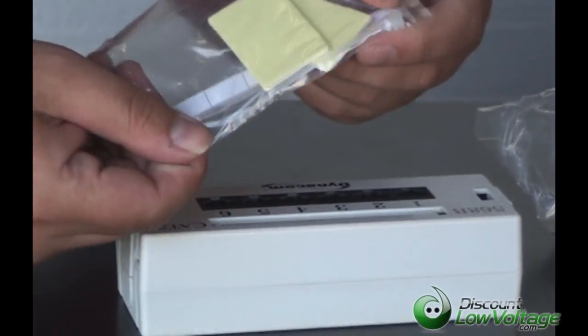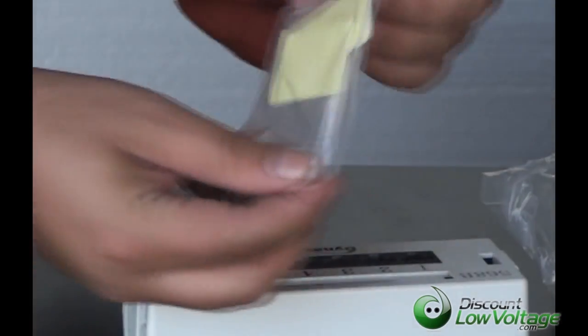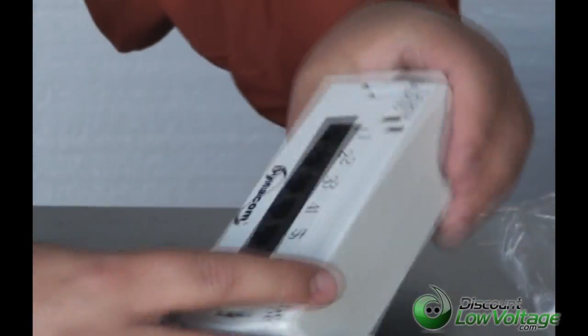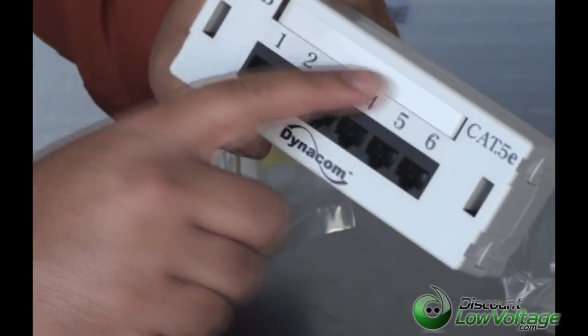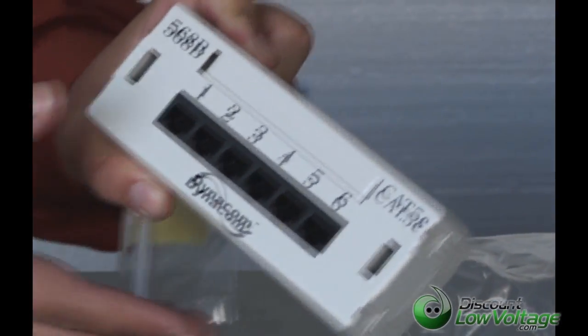It also includes a couple of small cable ties and a label strip, and that label strip's going to go right there on the front. So you can mark down whatever it is you're doing out there.